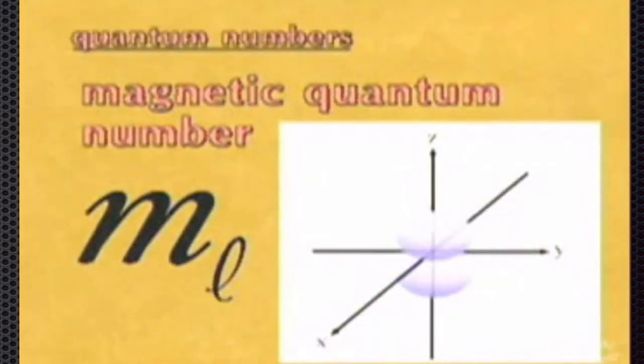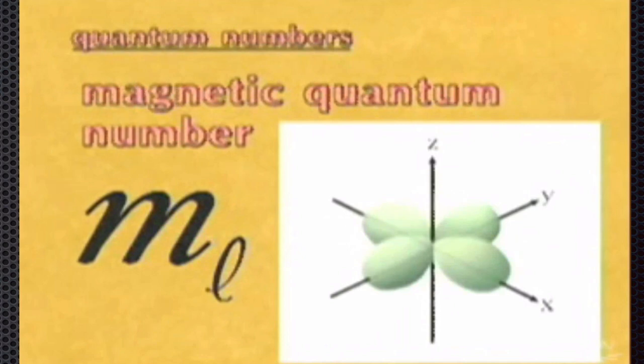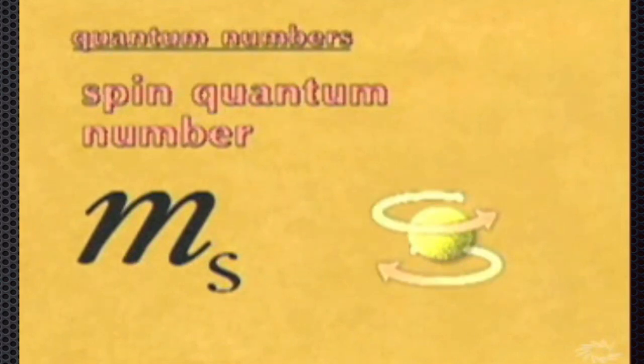The third quantum number refers to the orientation of the orbital. This refers only to the P, D, and F shaped orbitals. And finally, the fourth quantum number refers to the spin of the electron. An electron can be thought of as spinning on its axis in two possible directions. This means an orbital can only accommodate two electrons, each spinning in opposite directions.